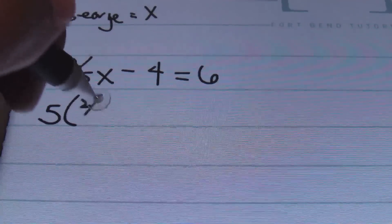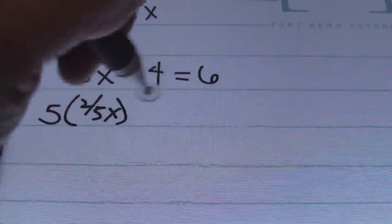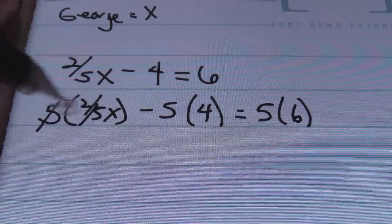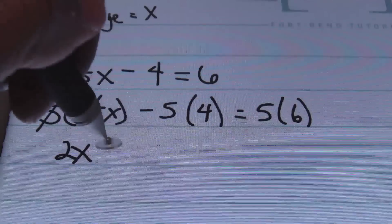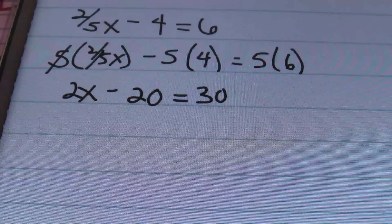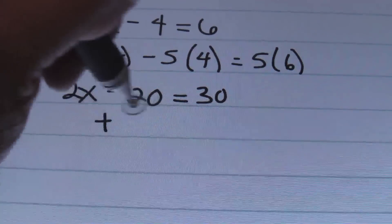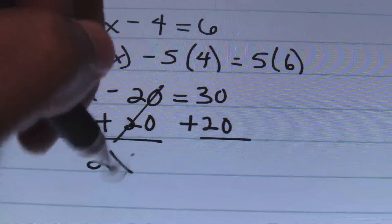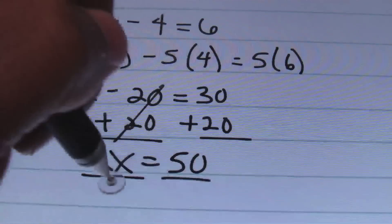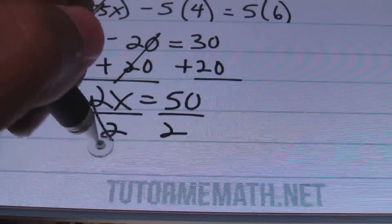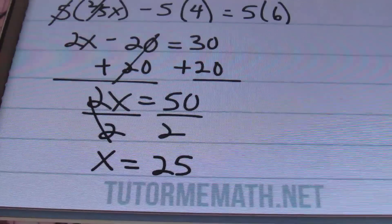I'm going to start by getting rid of the fraction by multiplying each and every term by five. So I'll have five times two-fifths x, minus five times four, equals five times six. My fives cancel out, and I bring down two x minus twenty equals thirty. Then I'll add twenty to both sides — the twenties cancel out, bringing down two x equals fifty. Dividing both sides by two, I end up with x equals twenty-five.